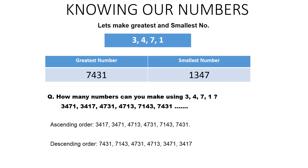In this way, our greatest number is seven thousand four hundred and thirty-one (7431). For the smallest number, we go in ascending order — we take the smallest digit first and go ahead. From these four digits, the smallest is one, then three, then four, then seven. So my smallest number is one thousand three hundred and forty-seven (1347), and the greatest is seven thousand four hundred and thirty-one (7431).